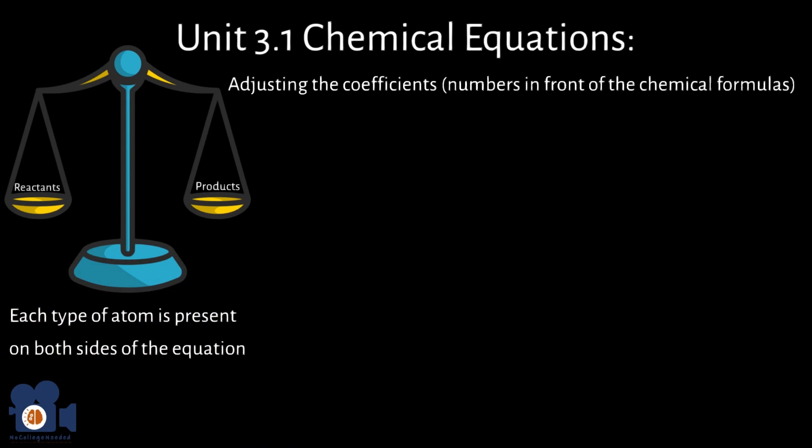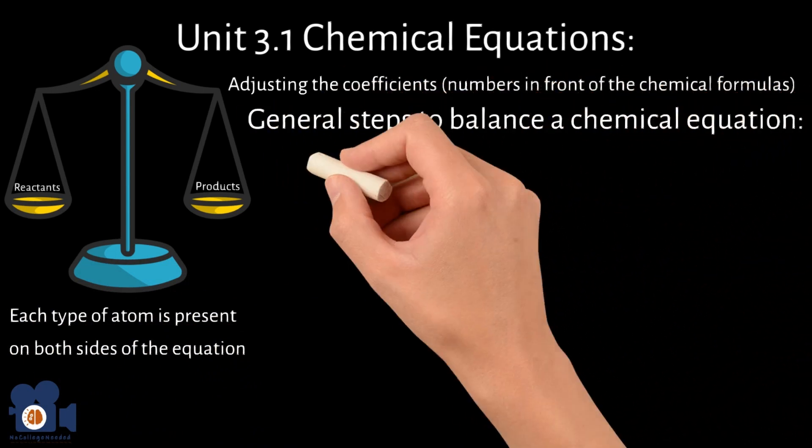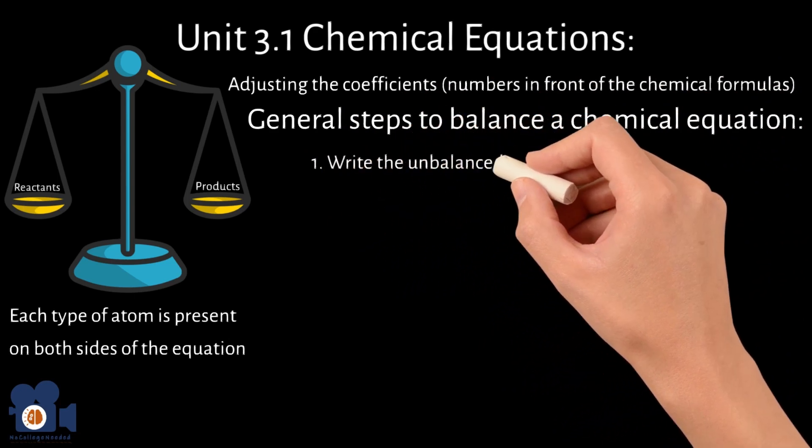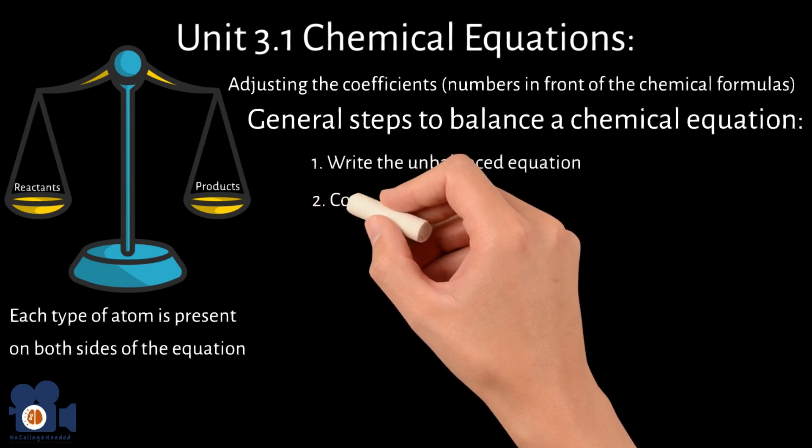Here are the general steps to balance a chemical equation. Step 1: Write the unbalanced equation. Start by writing the chemical equation with the correct chemical formulas for the reactants and products. Step 2: Count the number of atoms.